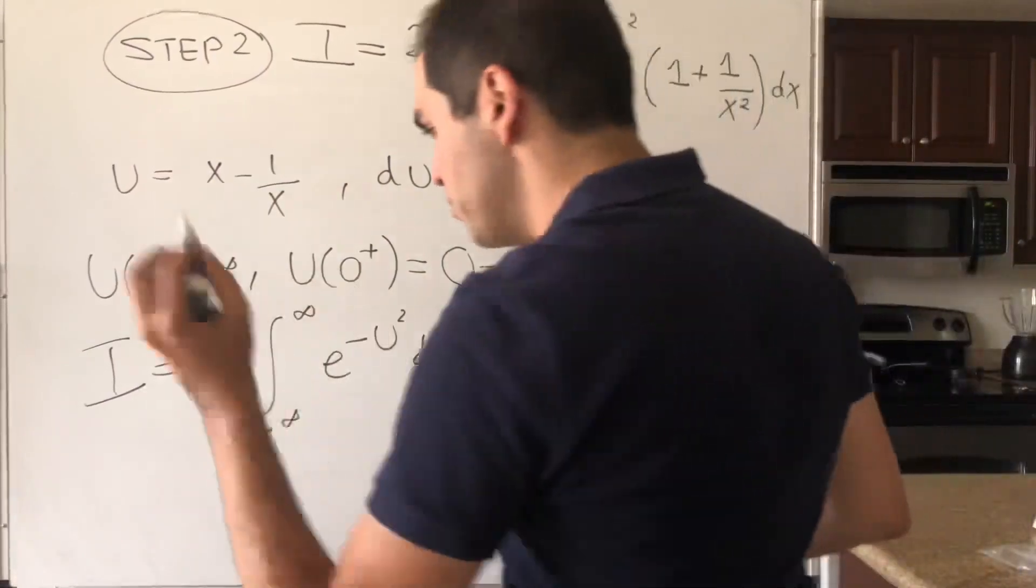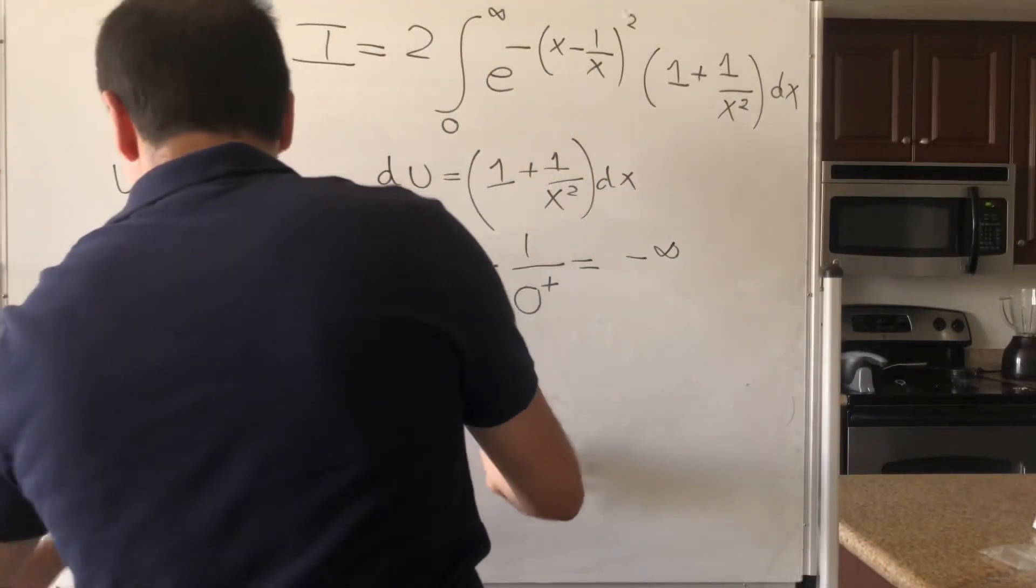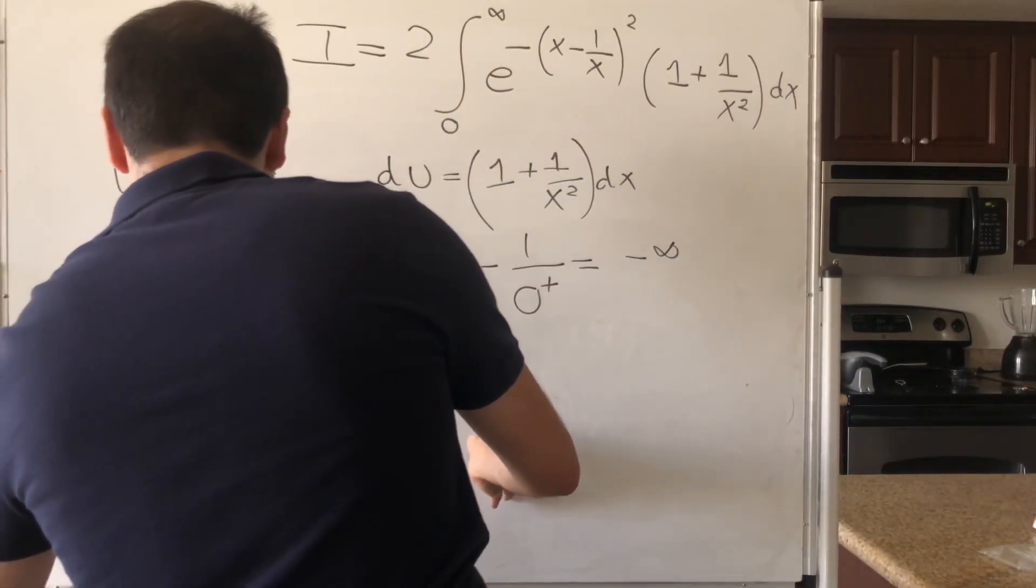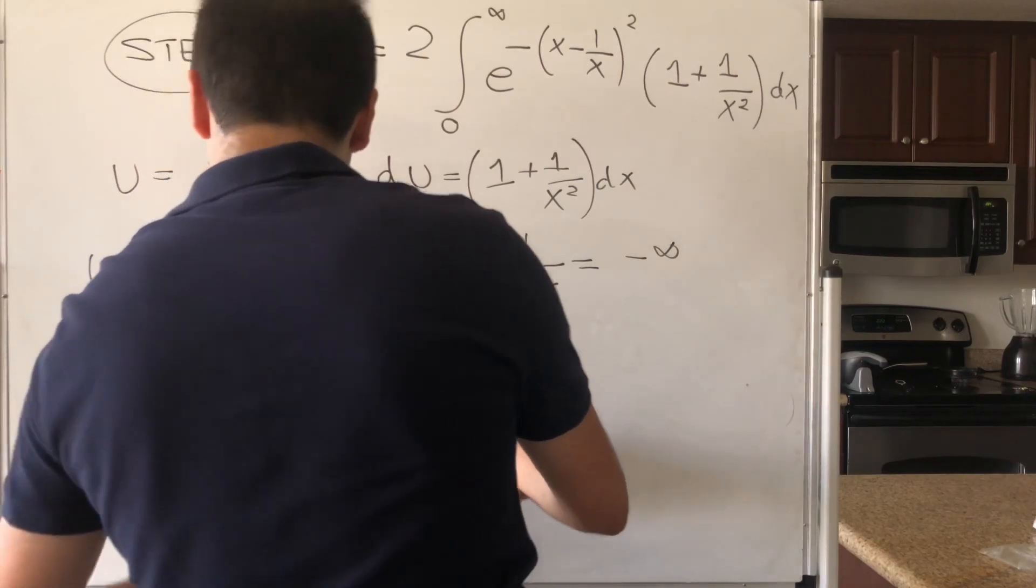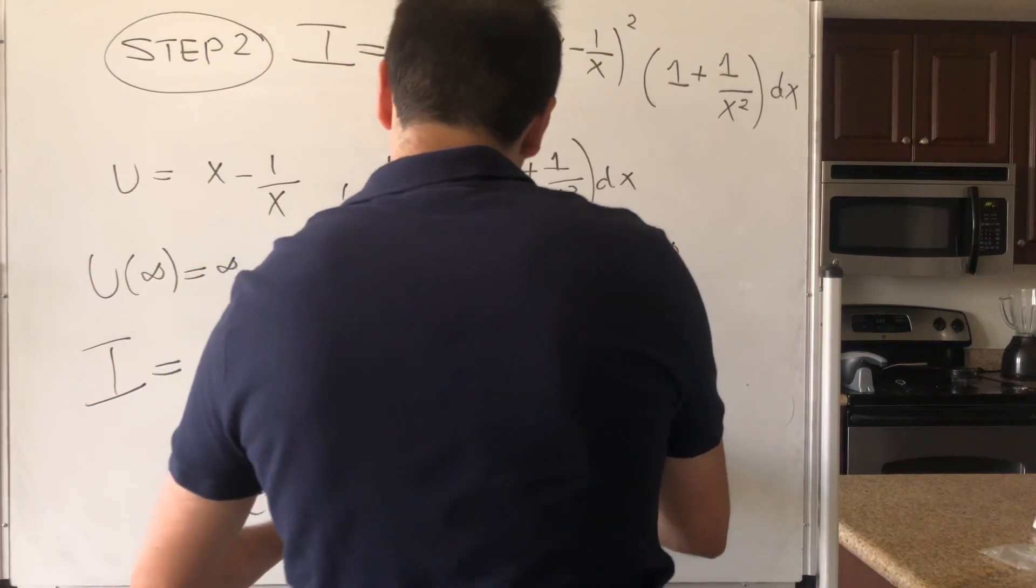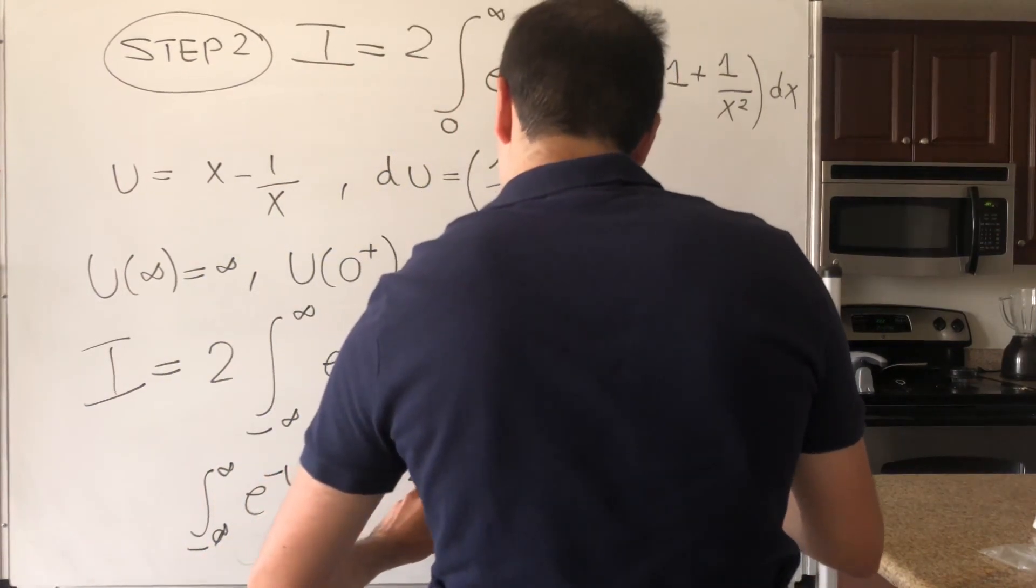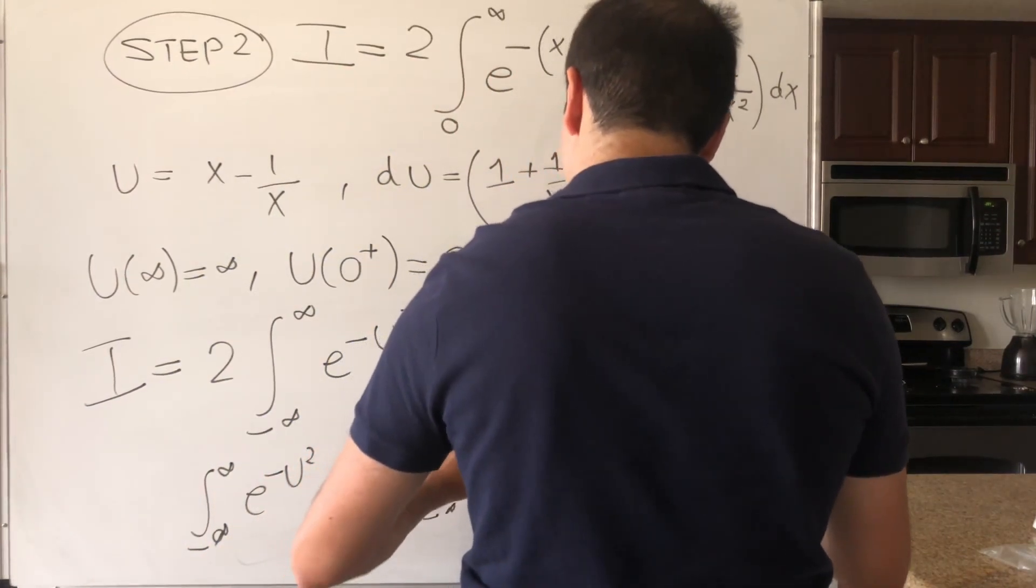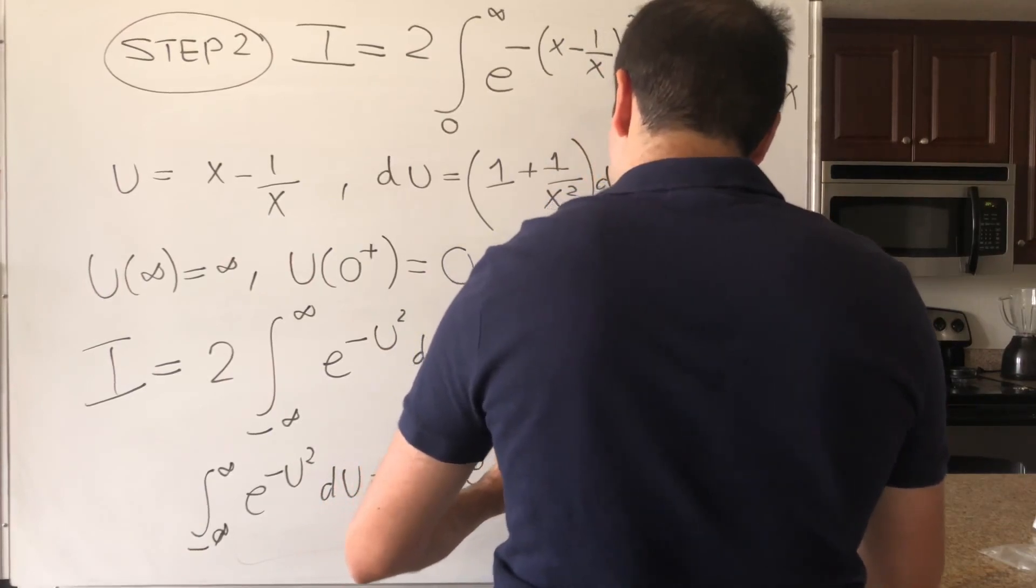Here suddenly i becomes 2 times the Gaussian integral. So basically we found that integral from minus infinity to infinity of e of minus u squared du equals 2 times integral from minus infinity to infinity e of minus u squared du.